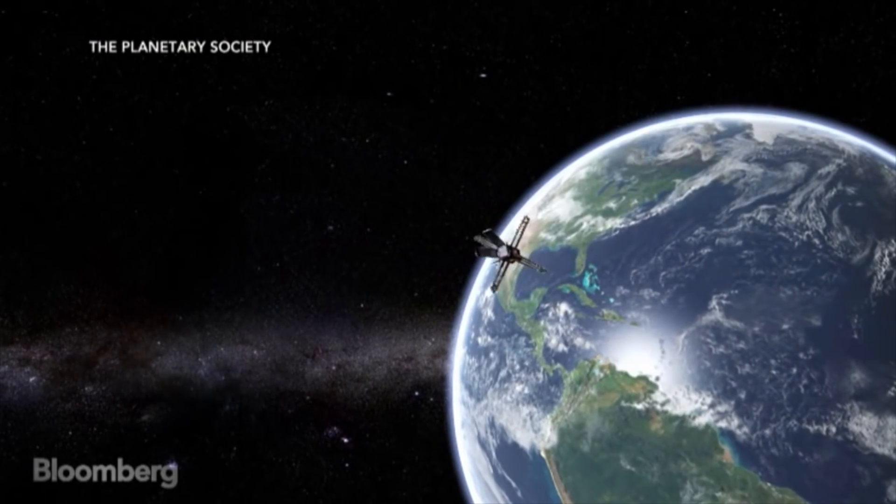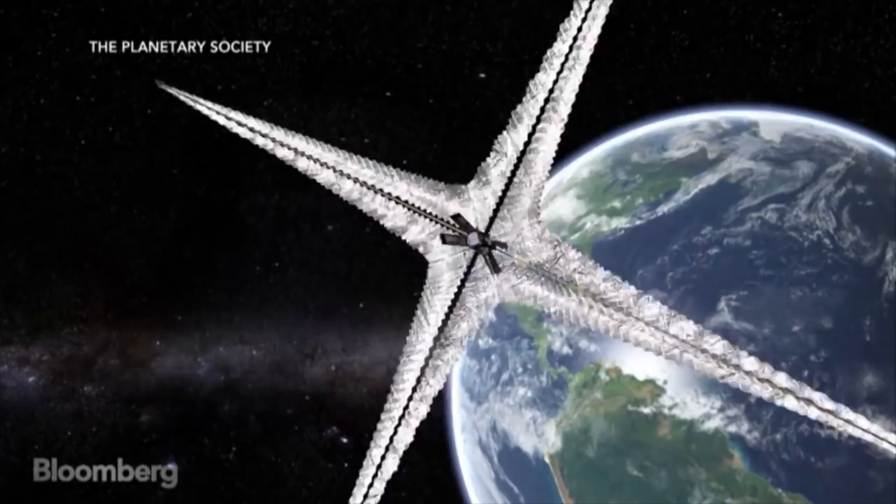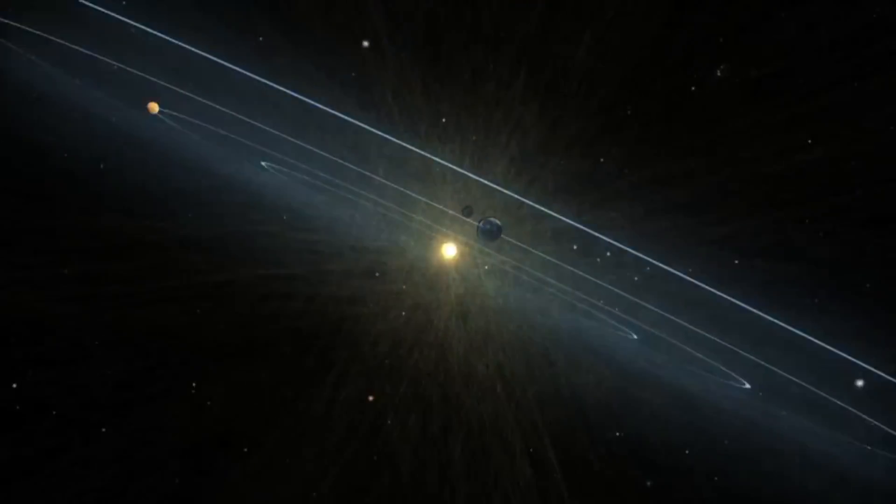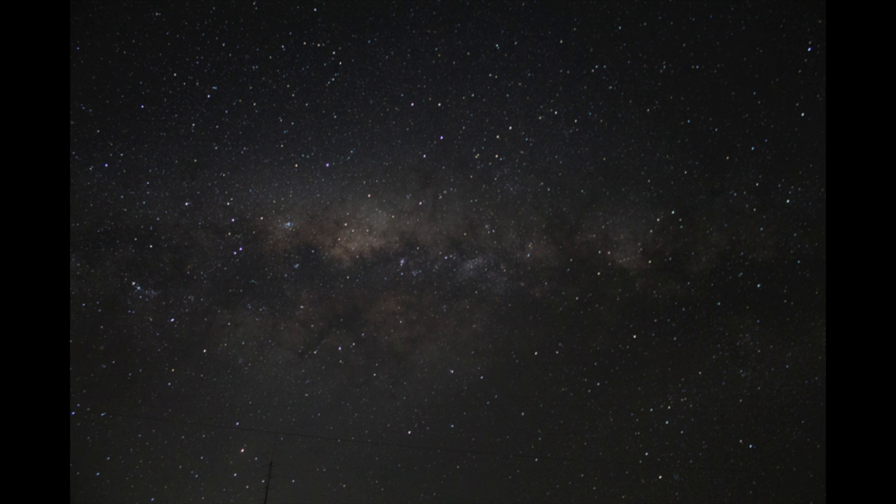Solar sails only use reflected photons from the sun for propulsion, which makes them pretty unusable farther away from the sun. Everything seems to have serious issues. So what could be the future of space travel?